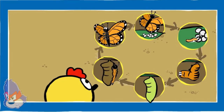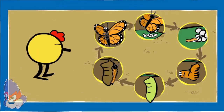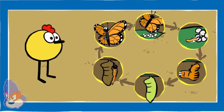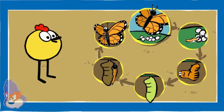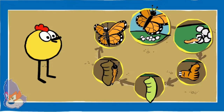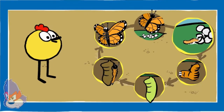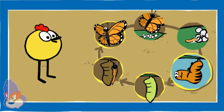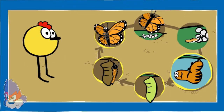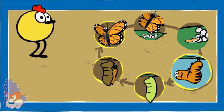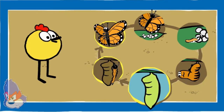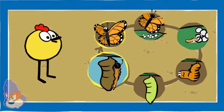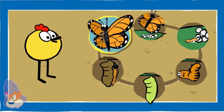Nice job! All the pictures are in the right order. This is how a butterfly grows and changes over time. A butterfly lays eggs. Caterpillars hatch from the eggs, eat leaves, and grow. The caterpillar attaches itself to a branch and creates a cocoon around itself. In the cocoon, the caterpillar changes into a butterfly. The butterfly begins to break out of the cocoon. Finally, the butterfly can fly around.